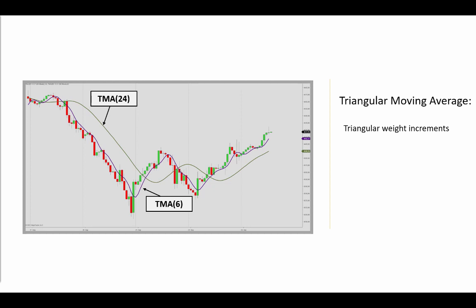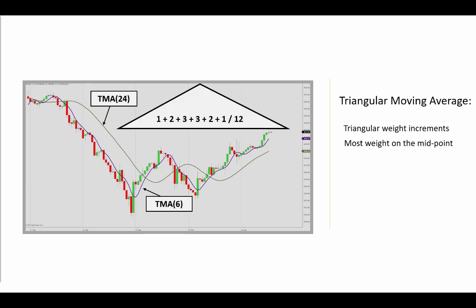A third approach addressing that is available with the triangular moving average. As the name implies, weight increments are assigned in a triangular pattern. From the first data point towards the midpoint, the weight increases linearly — starting with 1, 2, and then towards the midpoint we have 3, 3 — and then the weight starts to decrease linearly again. Therefore, the midpoint is the most important, more important than those at the front and the back end.